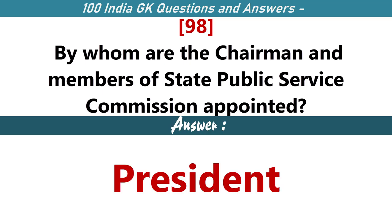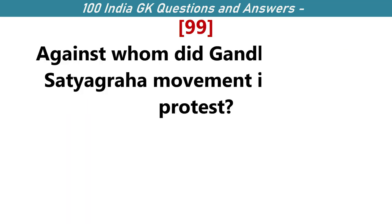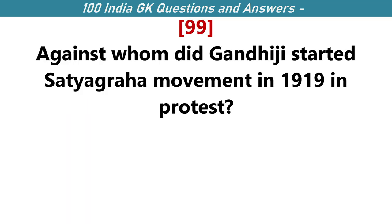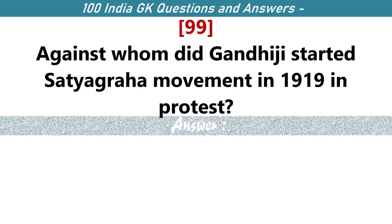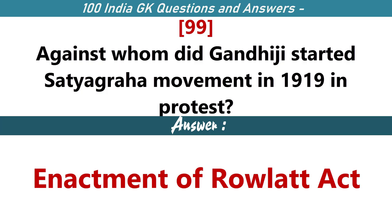By whom are the chairmen and members of state public service commissions appointed? The President. Against whom did Gandhiji start the Satyagraha movement in 1919 in protest? In protest against the enactment of the Rowlatt Act.